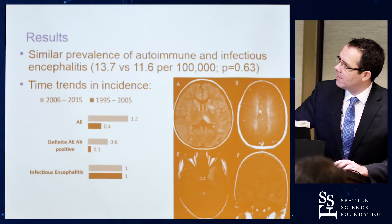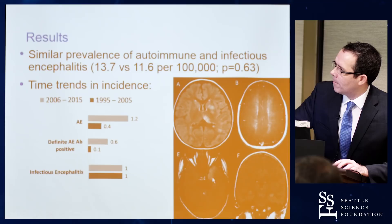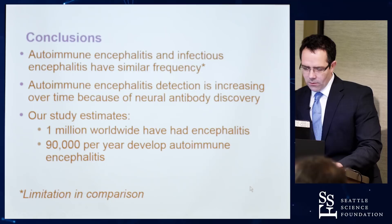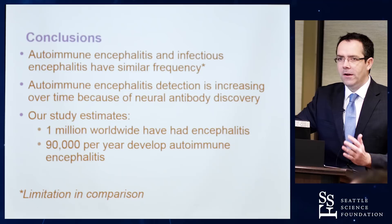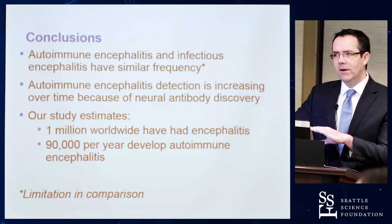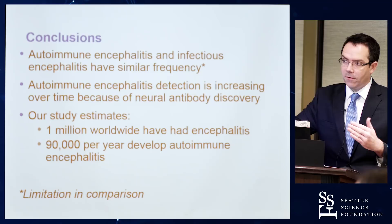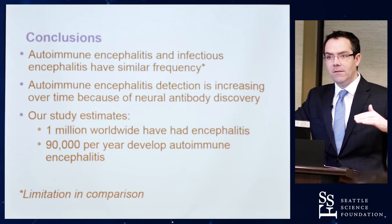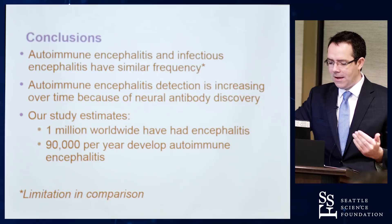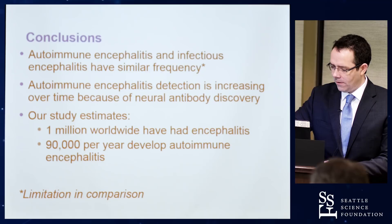Cases in this study included a patient with MOG antibodies, a patient with GFAP antibodies showing characteristic radial enhancement, and a patient with herpes simplex encephalitis. The conclusions were that autoimmune encephalitis and infectious encephalitis may have similar frequency, though there are caveats — diagnostic criteria for autoimmune encephalitis do not require an antibody, whereas infectious etiologies required a confirmed infection. Our study estimated up to a million people may have had autoimmune encephalitis, with 90,000 new cases per year.